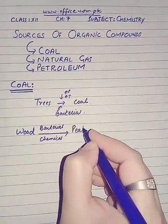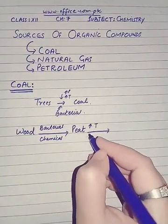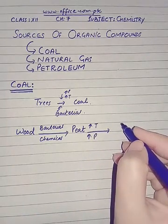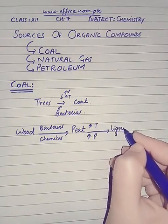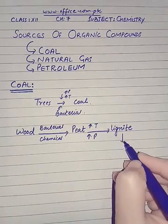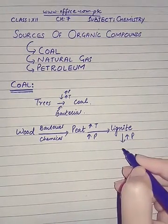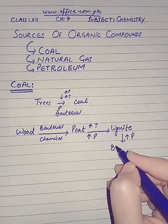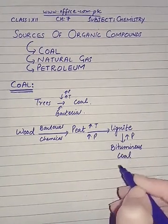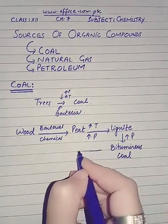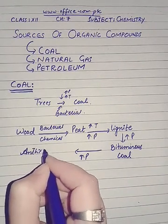The initial conversion produced inferior quality coal, which is peat. Further high temperature and high pressure converted it into lignite. Further pressure converted lignite into bituminous coal, and then a further increase in pressure gave rise to the finest quality of coal, which is anthracite. Anthracite is the best quality of coal.